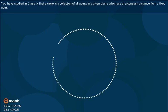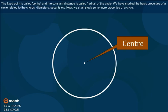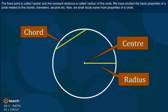You have studied in class 9 that a circle is a collection of all points in a given plane which are at a constant distance from a fixed point. The fixed point is called the center and the constant distance is called the radius of the circle. We have studied the basic properties of a circle related to chords, diameters, secants, etc.